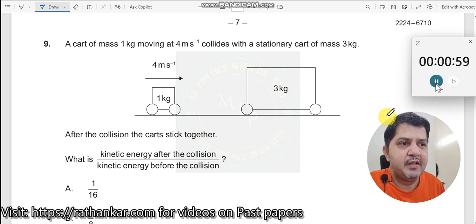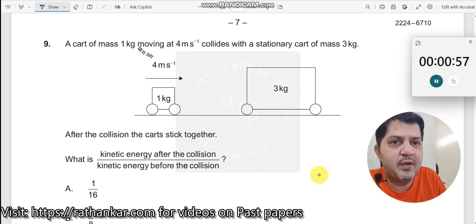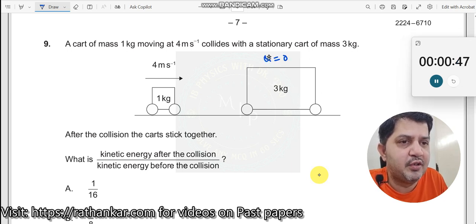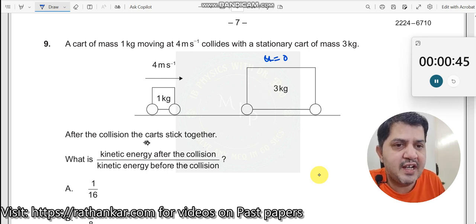Question number 9: A cart of mass 1 kg moving at 4 meters per second collides with a stationary cart of mass 3 kg, so u equals zero. After the collision, the carts stick together.